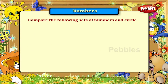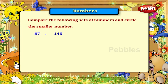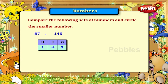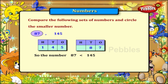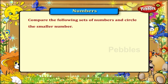Write the following sets of numbers and circle the smaller number. 87 and 145. The number 145 has 3 digits. The number 87 has only 2 digits. So the number 87 is smaller than 145. We circle the number 87.